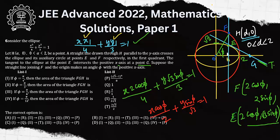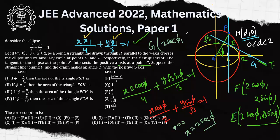Now we find point G, where this tangent line meets the positive x-axis. Setting y = 0 gives x = 2 sec φ. So the coordinates of G are (2 sec φ, 0).